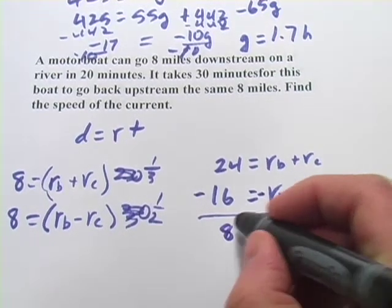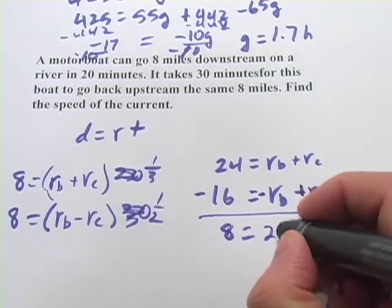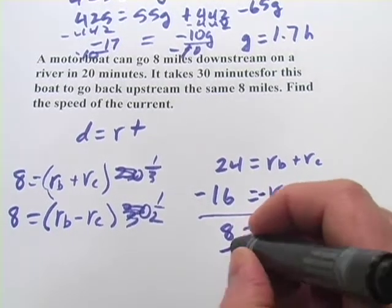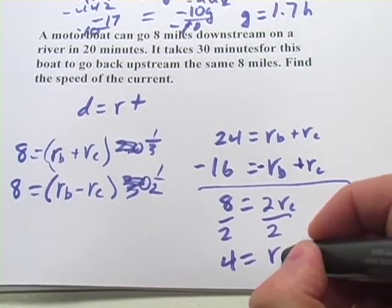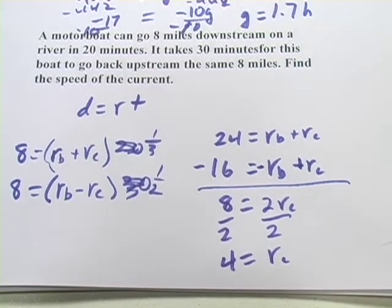So if we do that, we've got 8 equals 2 times the rate of the current, divide by 2, and you get 4 for the rate of the current. And that's all there is to that one.